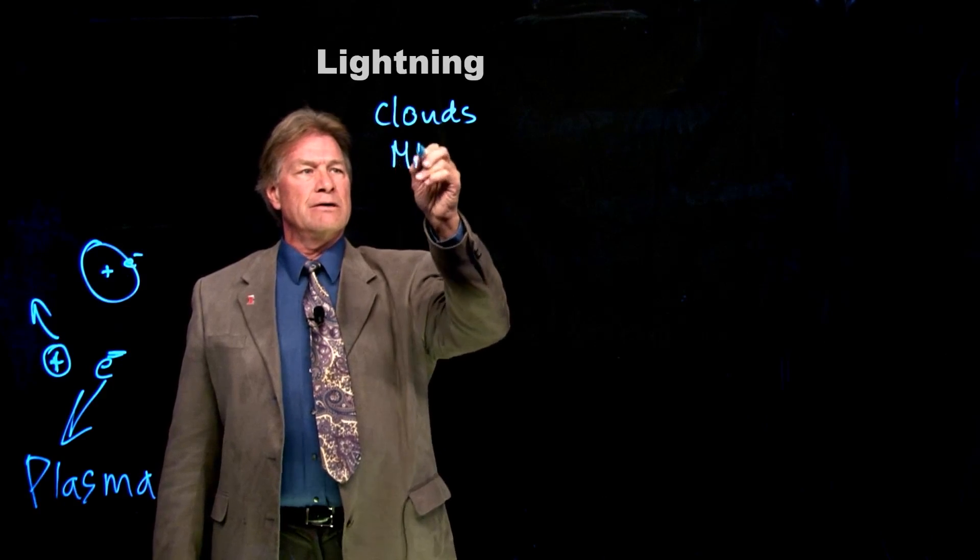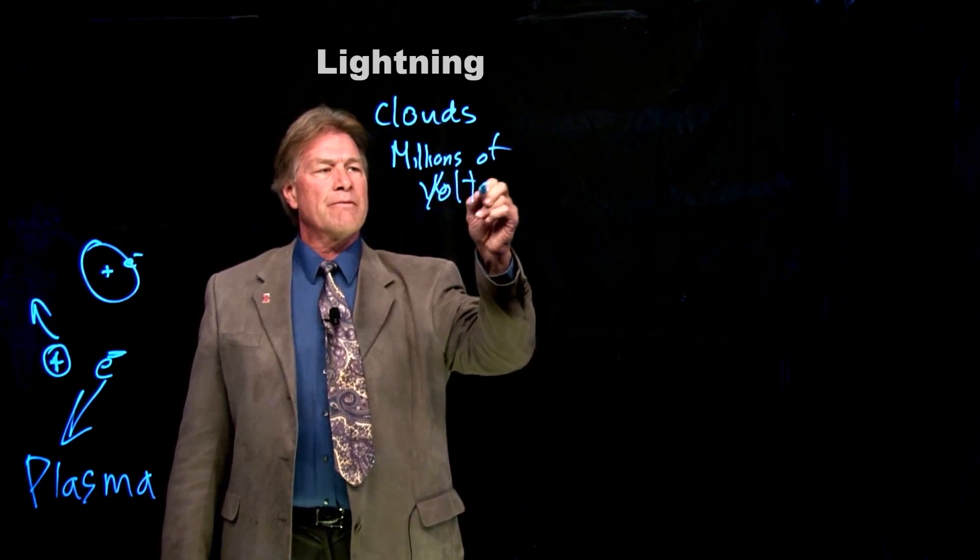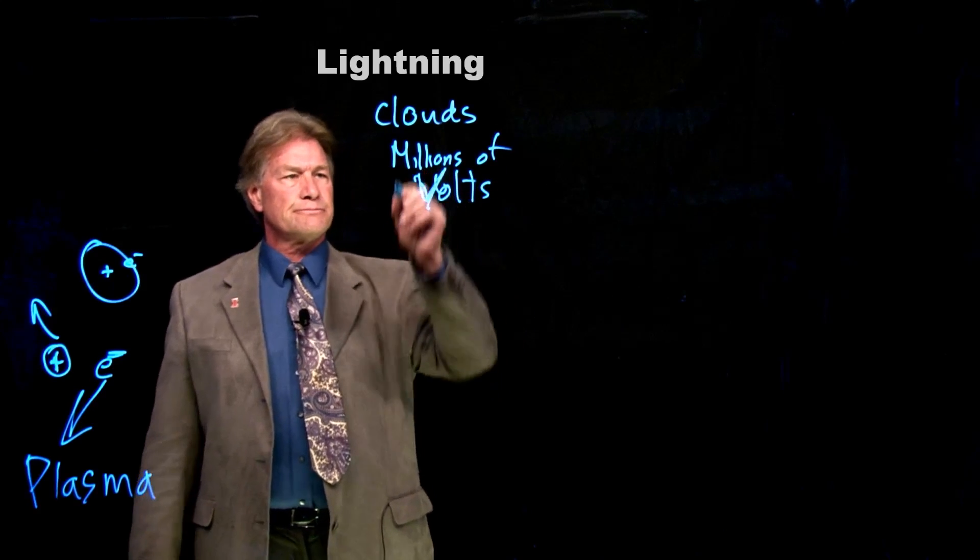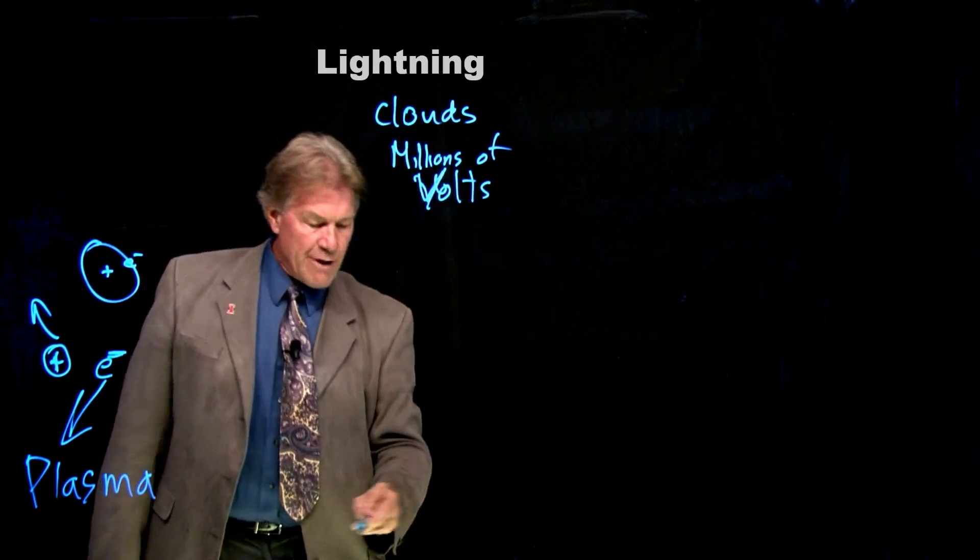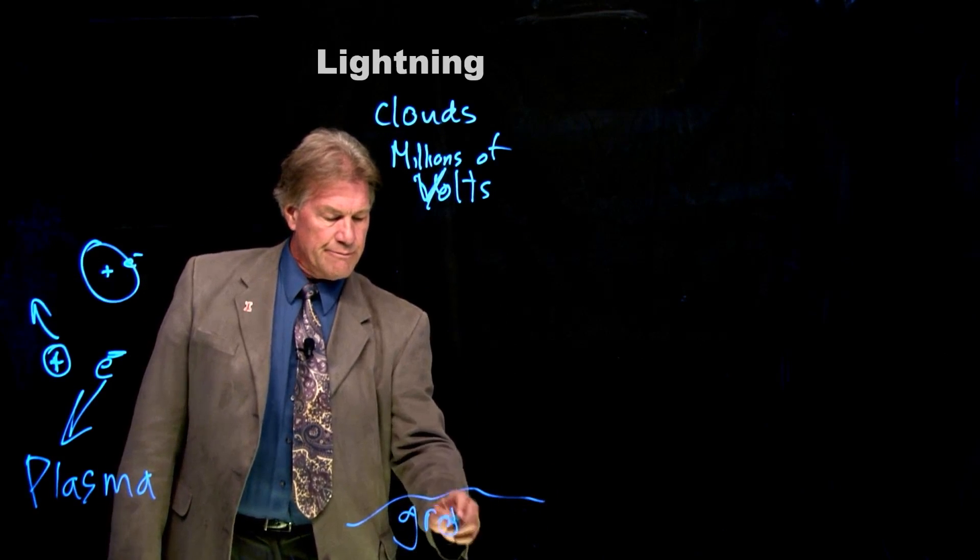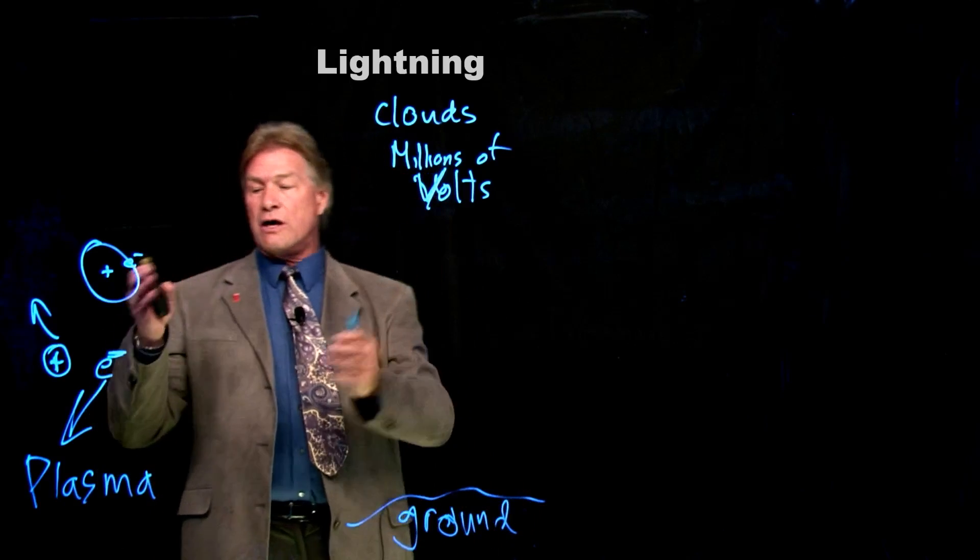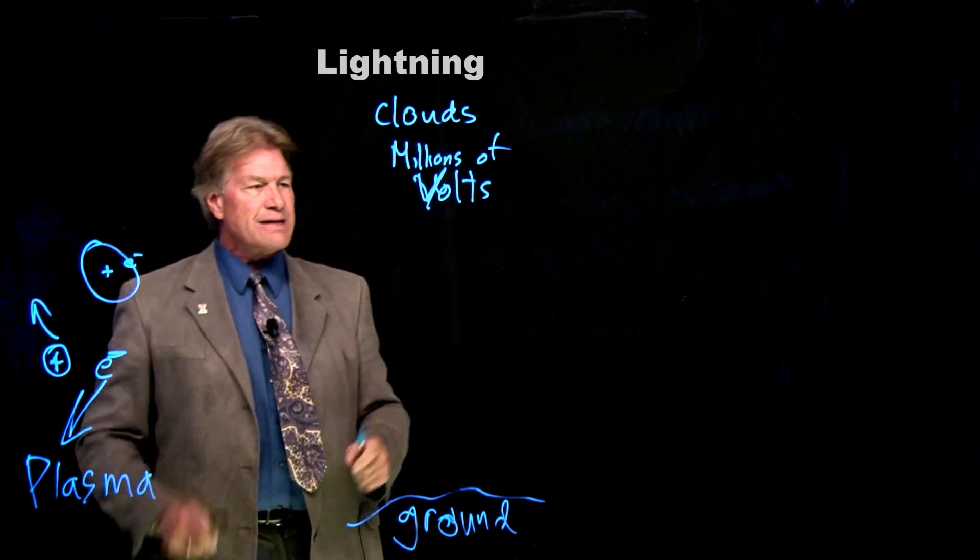And again, a lot more details in that other video. But the clouds end up having a large charge and so they are going to have a very high, many millions of volts charge on them, megavolts of charge. And we have ground down here somewhere. Here is the ground. Now, you might think, boom, it just ionizes all the air, making it a plasma. But that's not quite it.